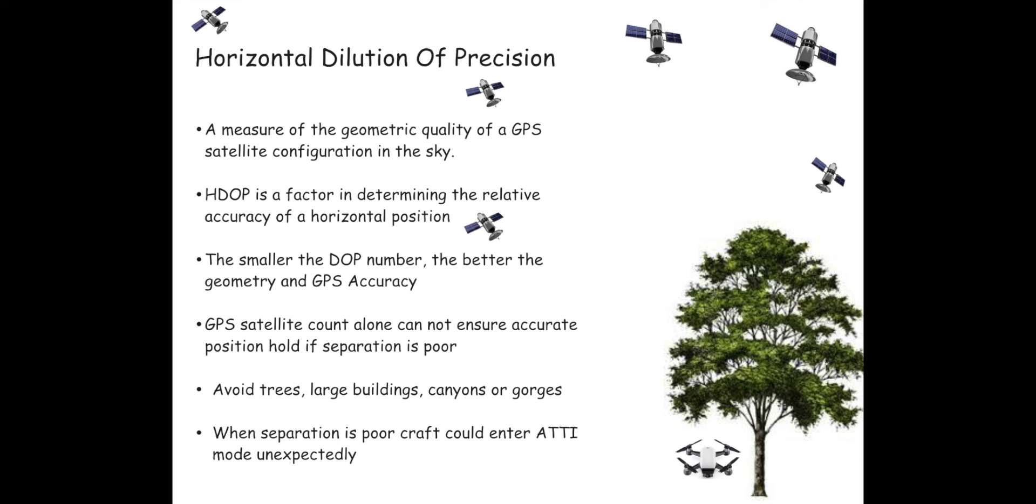The smaller number of DOP the better the geometry and accuracy of GPS. Reality is we do not see a DOP number on your DJI flight controller but this is simply represented by your GPS bars.